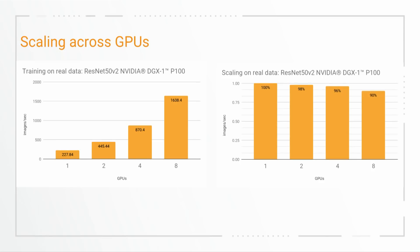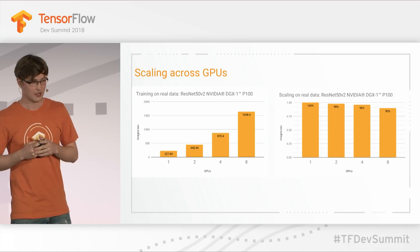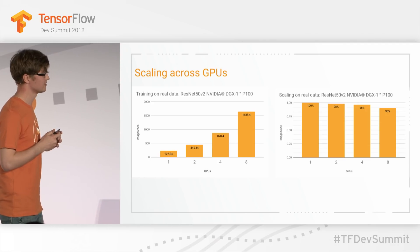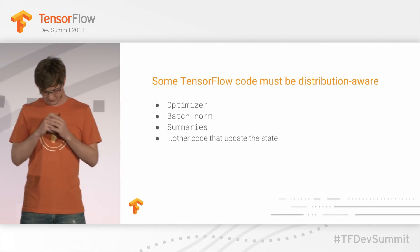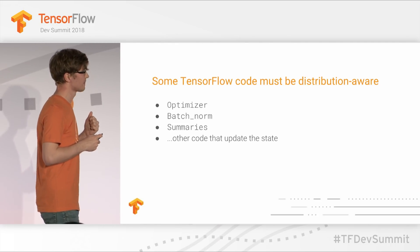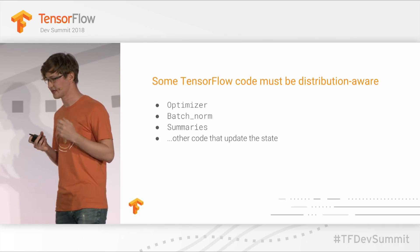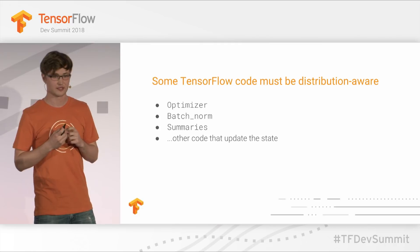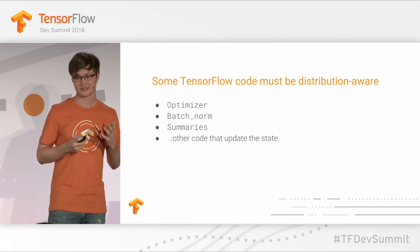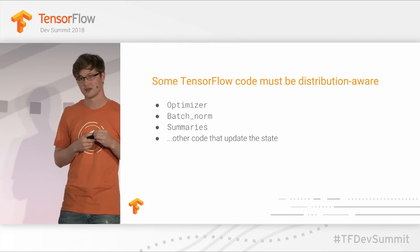Now, all of this would be a waste of time if it didn't perform well — and it does perform well. As you add GPUs, this implementation scales well. We have a team at TensorFlow specifically working on fast all-reduce implementations for various machine configurations, and this implementation gets 90% scaling efficiency on eight GPUs — without any change to the user's model. This works because we changed everything in TensorFlow that isn't your model: the optimizer, batch norm, summaries — everything that writes state now needs to become distribution-aware, meaning it learns how to combine its state with other GPUs.